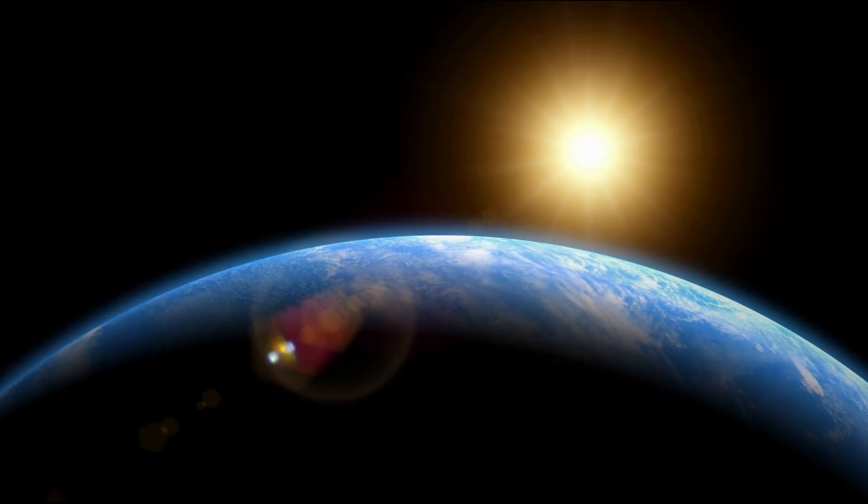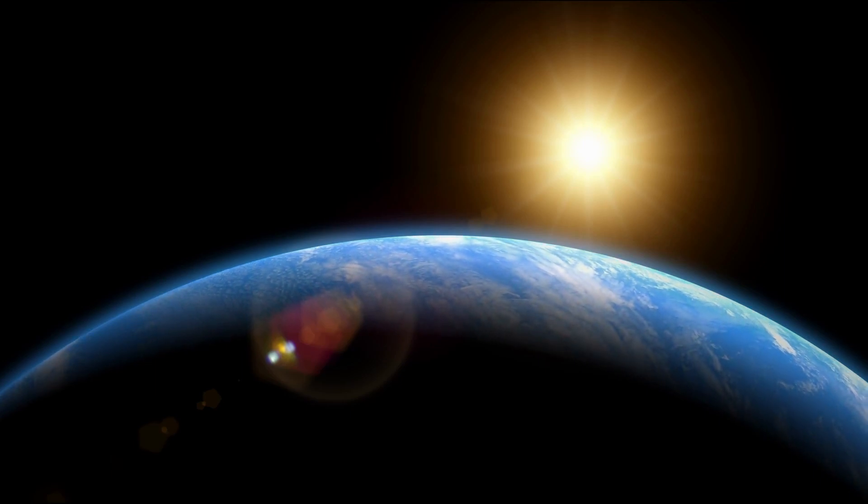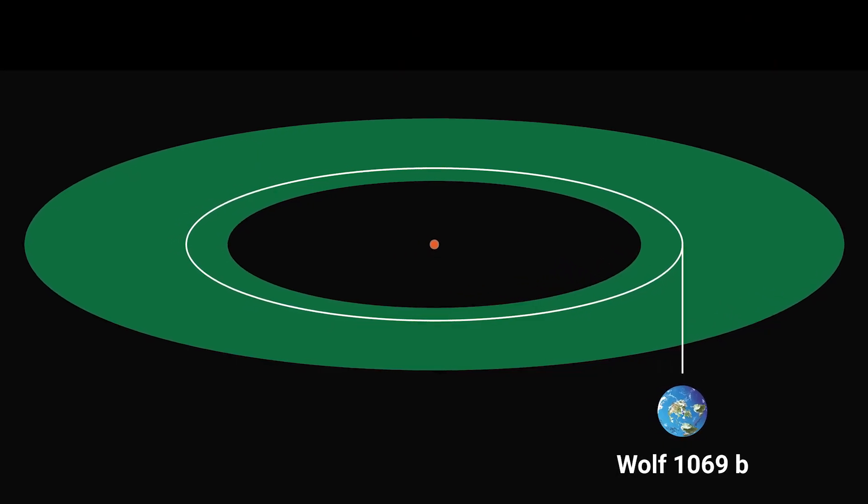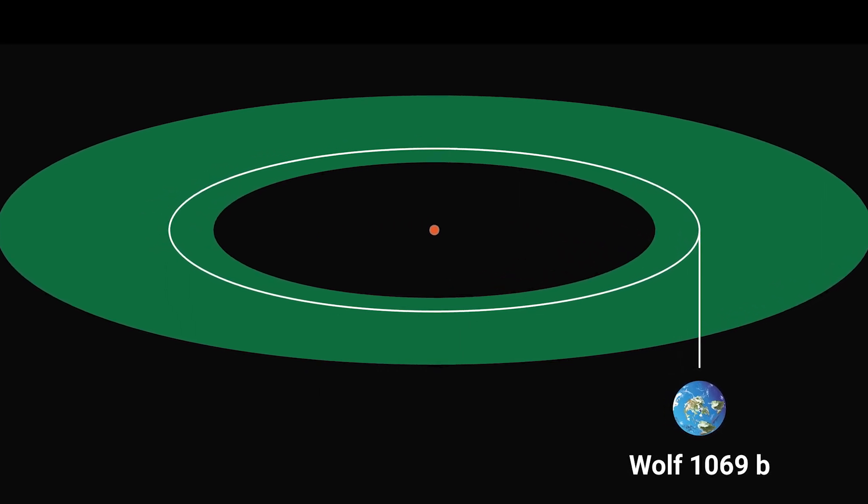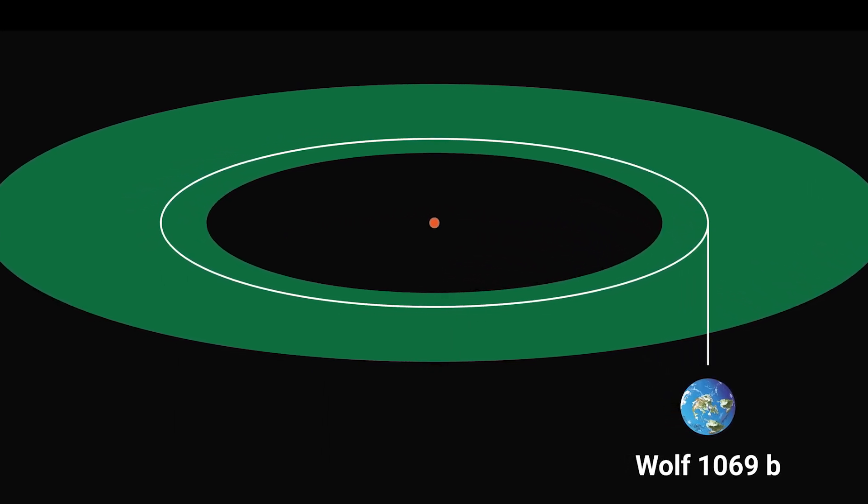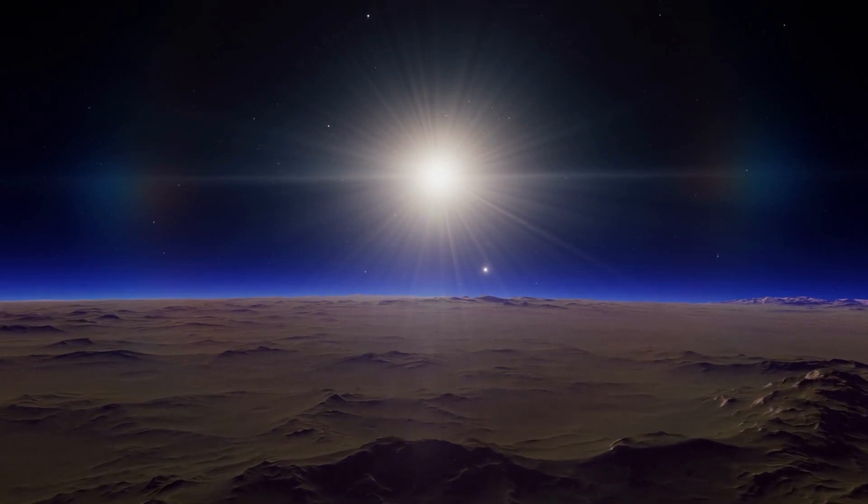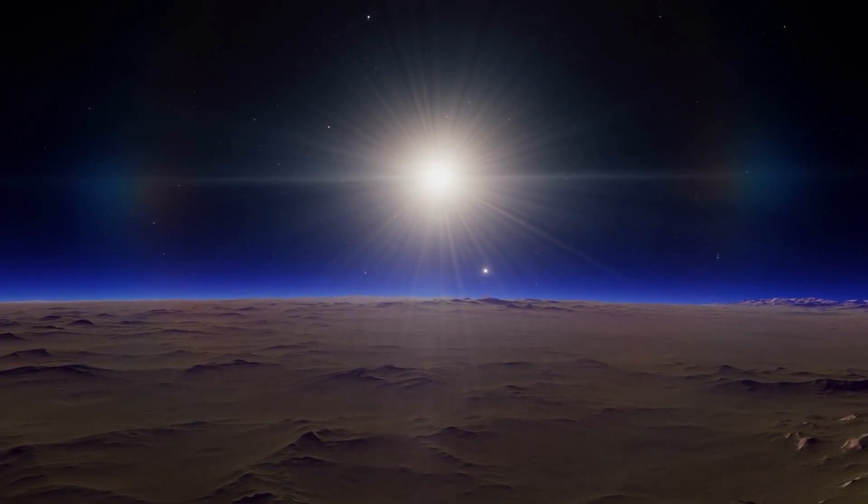However, due to the small size and low luminosity of the red dwarf star, Wolf 1069 b still lies within the habitable zone, the region around a star where temperatures are just right for liquid water to exist. This means that the exoplanet might have a stable climate suitable for life.